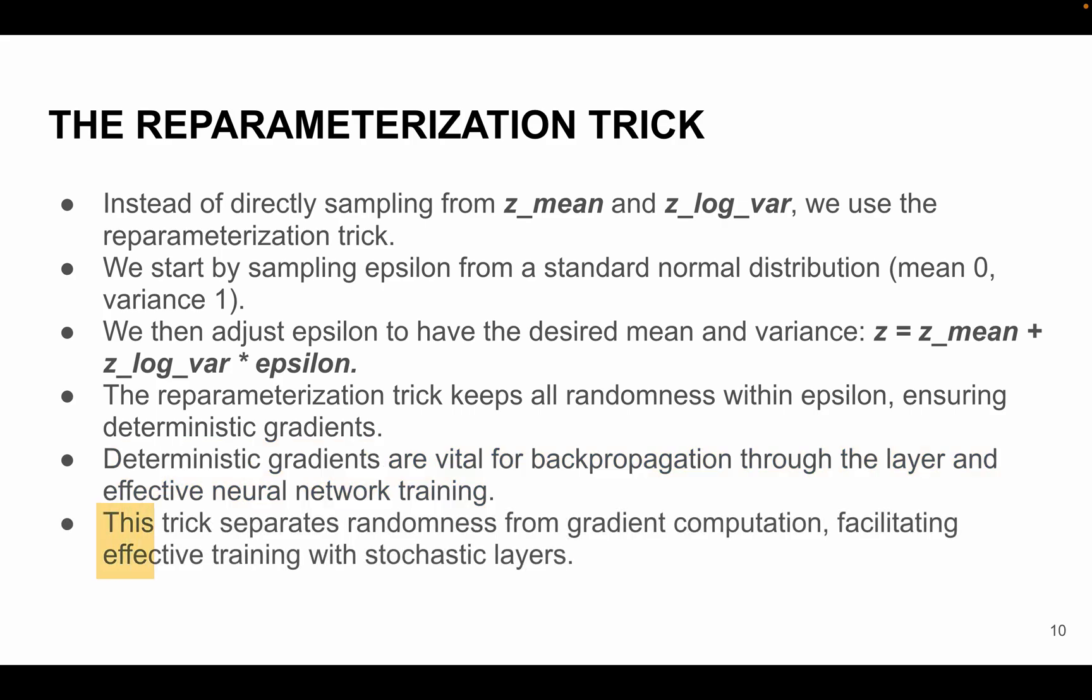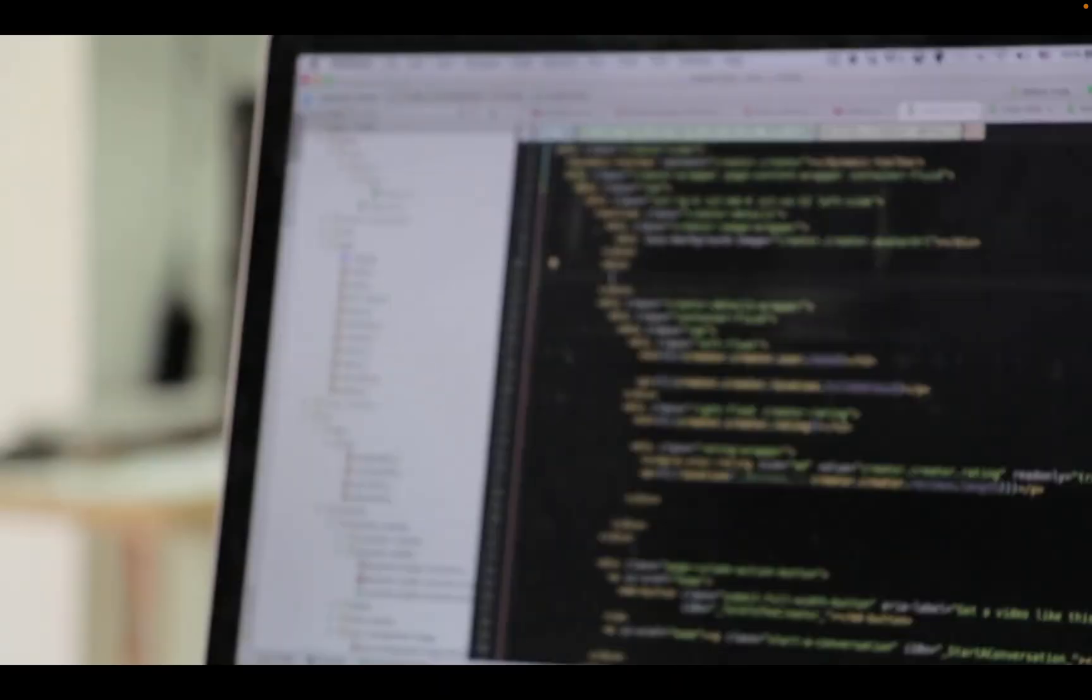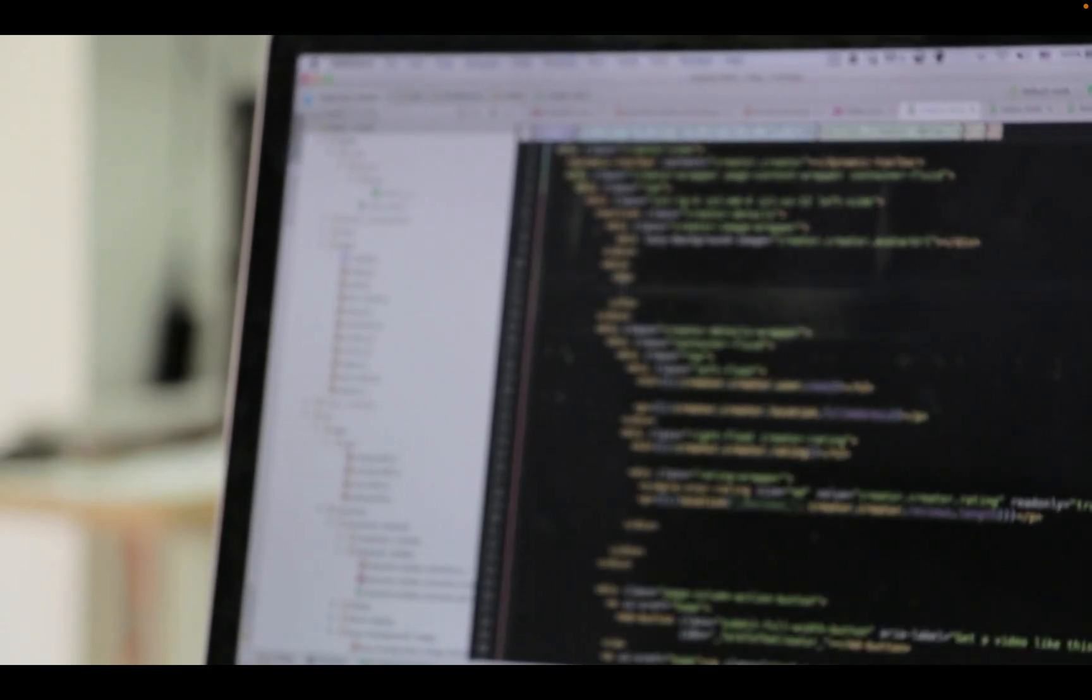In essence, or to summarize this, the reparameterization trick separates the randomness introduced by the stochastic layer from the deterministic computation of gradients, making it possible to train models with such layers effectively. So this is everything with respect to variational autoencoder's theoretical part. If you have watched this video till now, please like this video and share with all our data science enthusiasts. In the next session I will be actually implementing variational autoencoders in Python. So subscribe to this channel. Bye bye guys, take care.